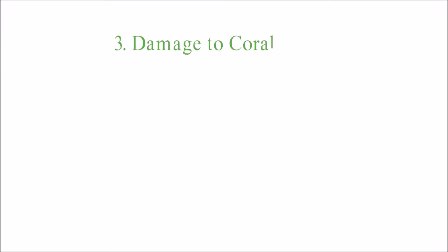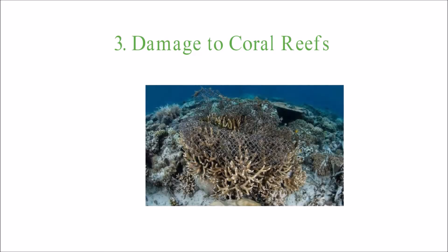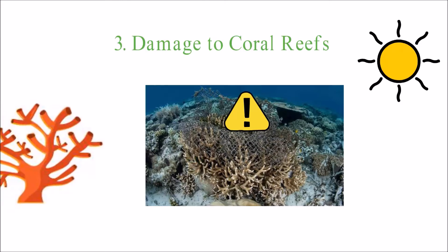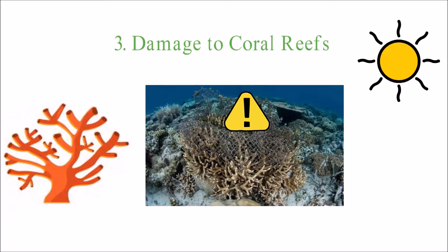3. Damage to Coral Reefs. Ghost nets can kill coral reefs when they sink to the ocean floor. They can also pull on corals, causing irreparable damage. Fishing nets left at sea may keep coral reefs from getting enough sunlight, which is important for corals because they need it to grow. Ghost nets may also be filled with toxins that can hurt corals. These nets can cover a large area, causing significant damage to coral reefs. Corals are very important to marine ecosystems, as they produce oxygen through the process of photosynthesis.